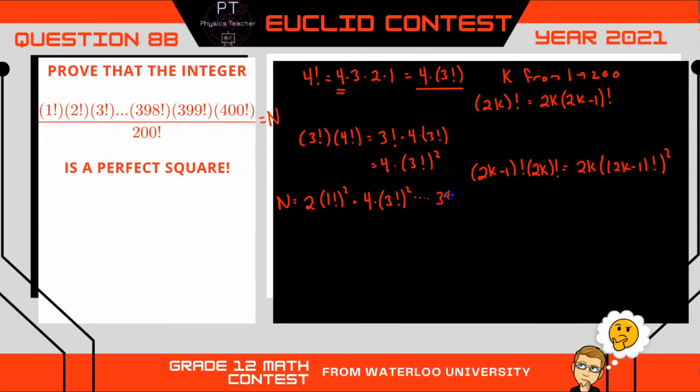to 398 times 397 factorial squared, and 400 times 399 factorial squared. And that's still all divided by 200 factorial.